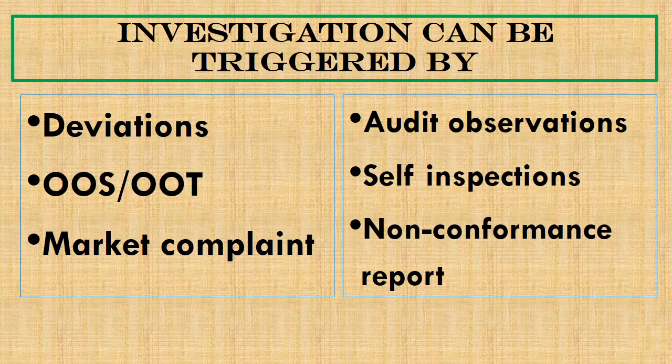In the pharmaceutical industry, investigations can be triggered by various triggering factors. Deviations are the most common triggering factor for investigations. Along with deviations, we perform investigations for OOS and OOT observations. We also perform investigations for market complaints, audit observations, self-inspection, and other non-conformance reports.